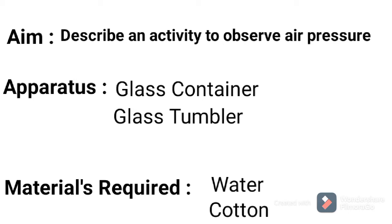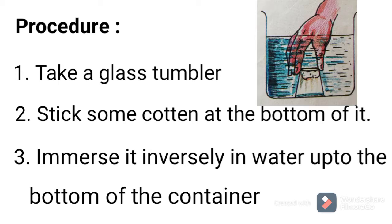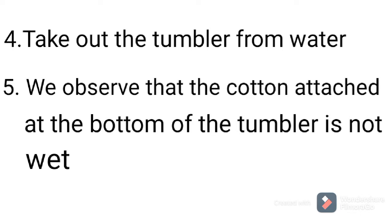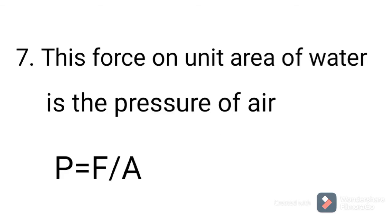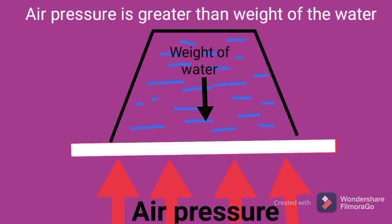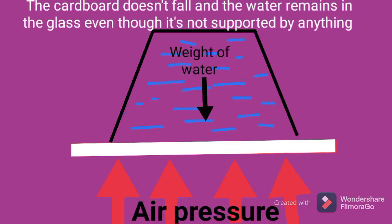The aim of the activity is to observe air pressure. The apparatus needed are a glass container or tub and a glass tumbler; the materials required are water and cotton. The procedure: take a glass tumbler, stick some cotton at the bottom, immerse it inversely in water up to the bottom of the container. Take out the tumbler — we observe that the cotton is not wet. This is due to the air force applied on the water, stopping water from entering. This force per unit area is the pressure of air, which is greater than the weight of the water, so in the second experiment the cardboard does not fall and water remains in the glass even without any support.